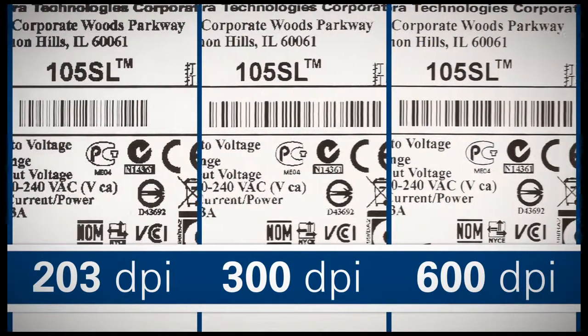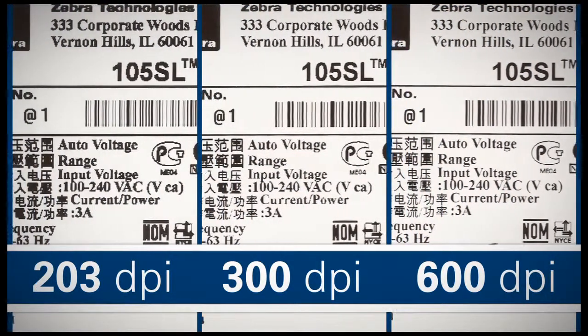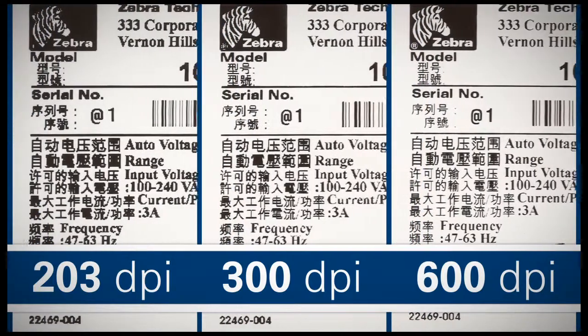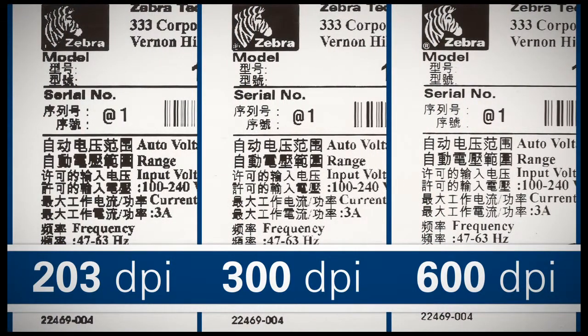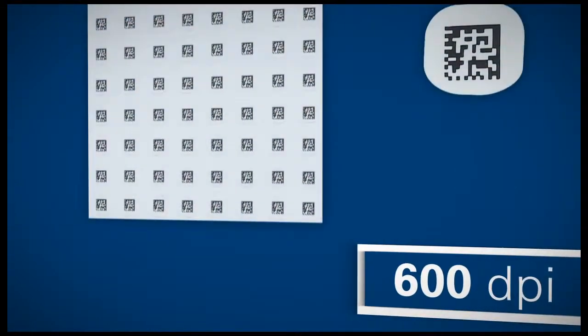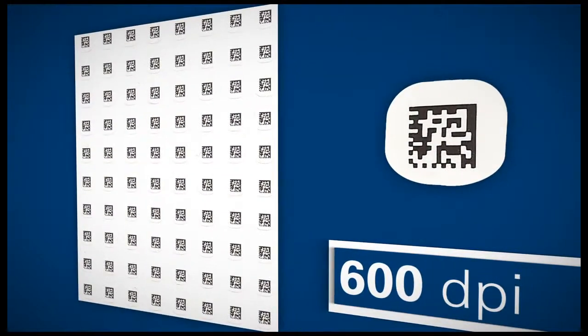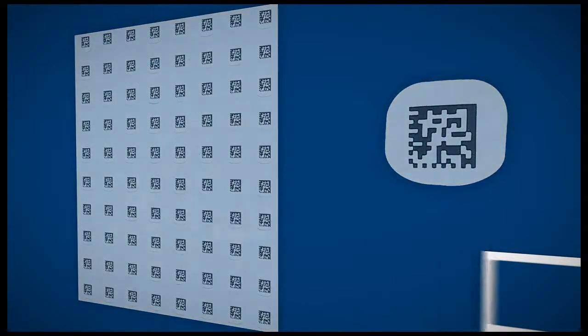600 DPI is also required when printing Asian fonts less than 10 points. 2D barcodes smaller than 0.3 inches by 0.3 inches require a 600 DPI printer to ensure they are scannable.